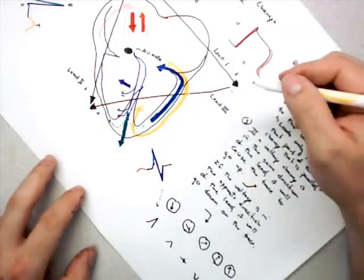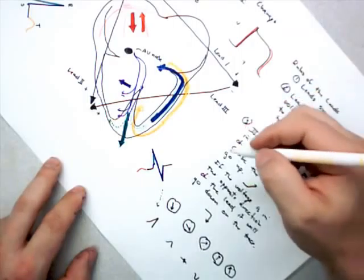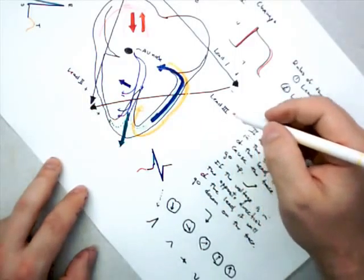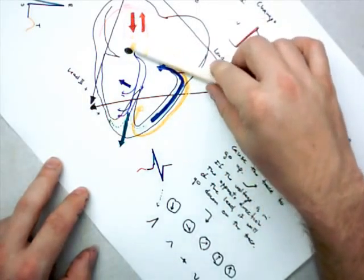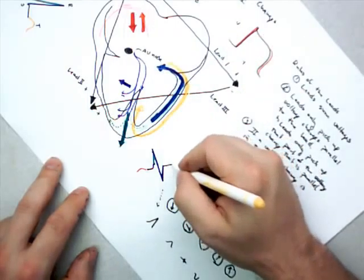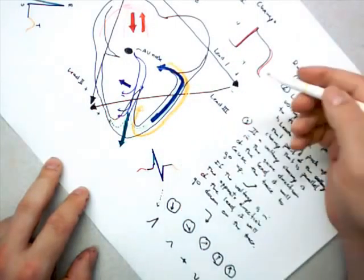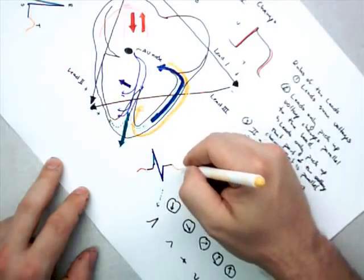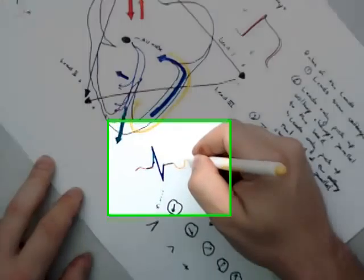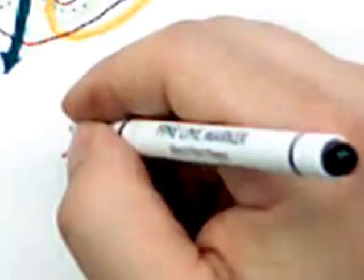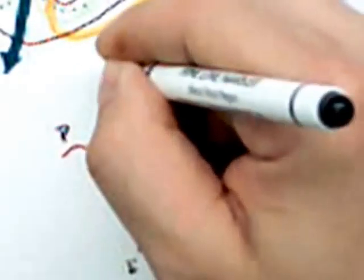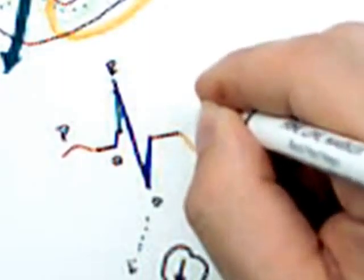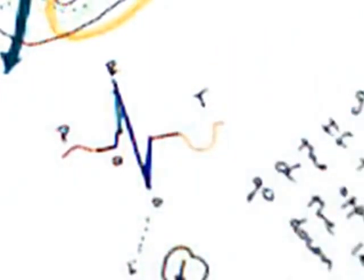And the T wave in lead 3 often looks inverted. And the reason that is, is because we start running opposite of our lead. It just takes it down, runs with our lead, and then it kind of runs with our lead. And so often, the T wave is inverted. Thank you.